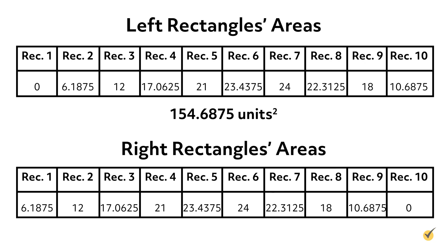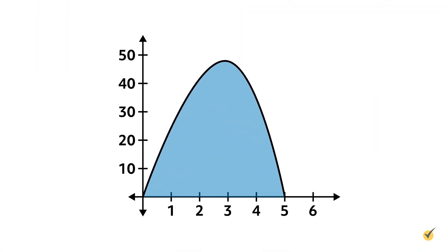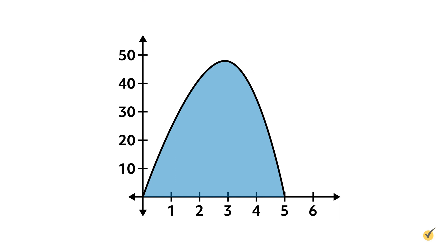We are also interested in the right Riemann sum with 10 rectangles. From the heights we found, we can again find each area by multiplying the heights by 1/2. The right corners are at 1/2 intervals from x = 0.5 to x = 5. These areas all add up to 154.6875 square units. Even though this value is again the same as the left Riemann sum, this will not always be the case—this function arcs in such a way that the left and right sums happen to come out equal.